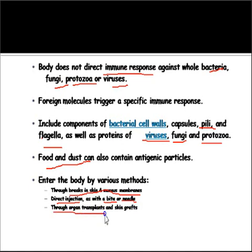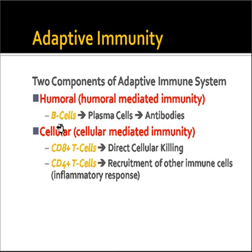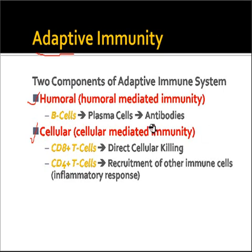Entry can also occur through organ transplantation or skin grafts. Remember, anything foreign to us will generate an immune response. Organs transplanted from another individual are sometimes treated by the body as non-self, which can be a source of immune response. This specific or adaptive immunity has two components: humoral immunity and cell-mediated immunity. In humoral immunity, the major player is antibodies, so it is also known as antibody-mediated immunity.